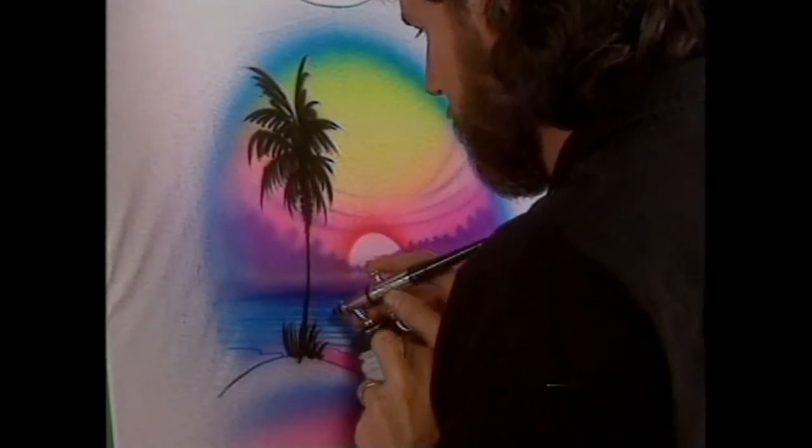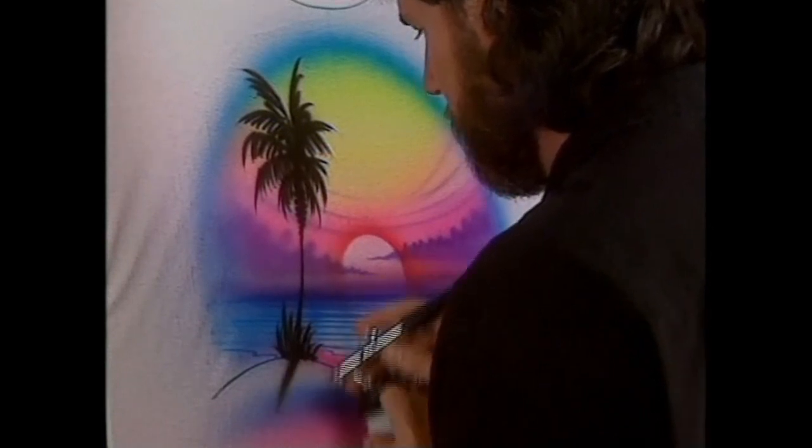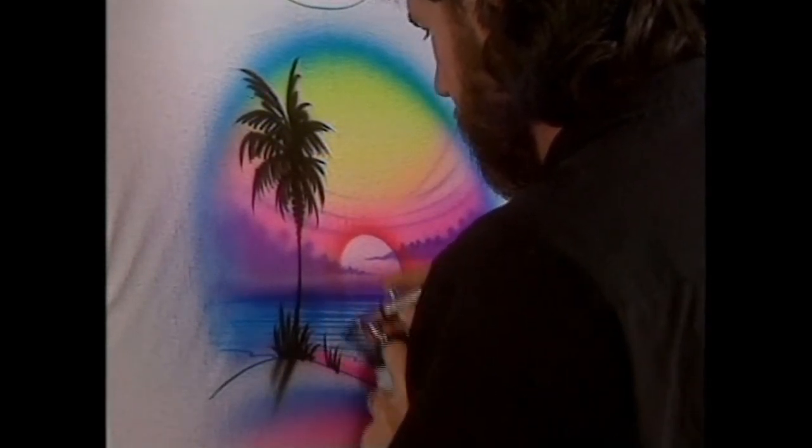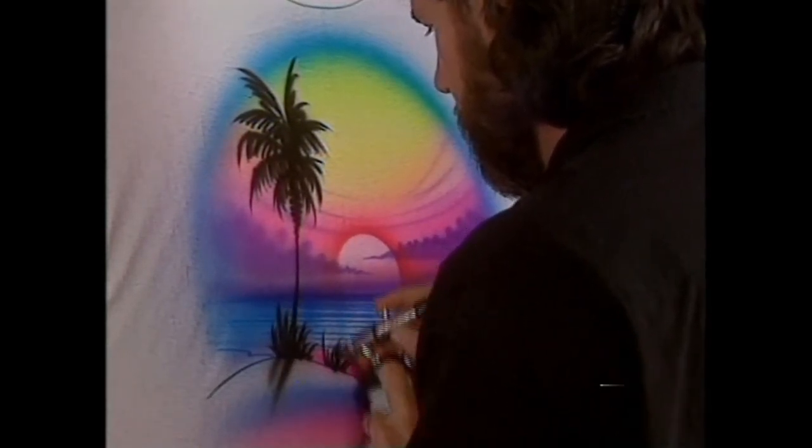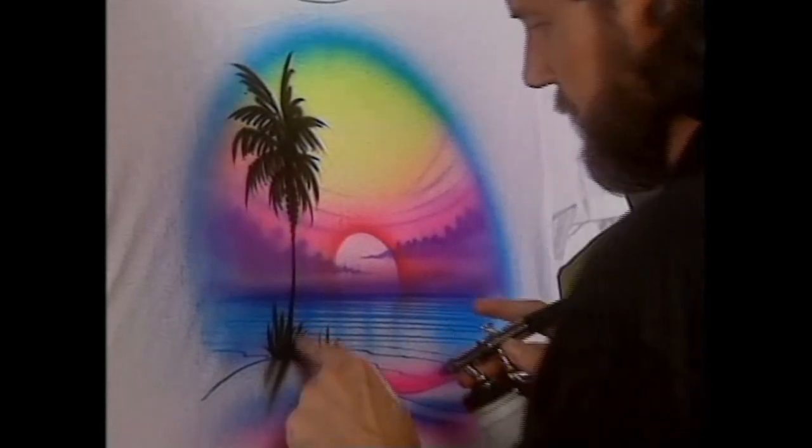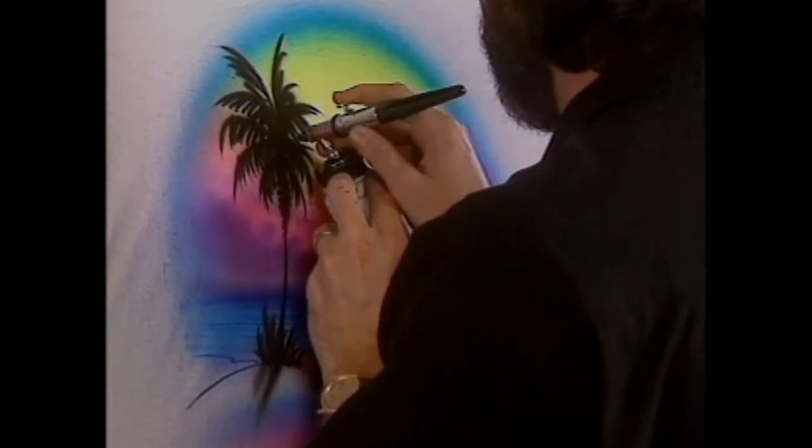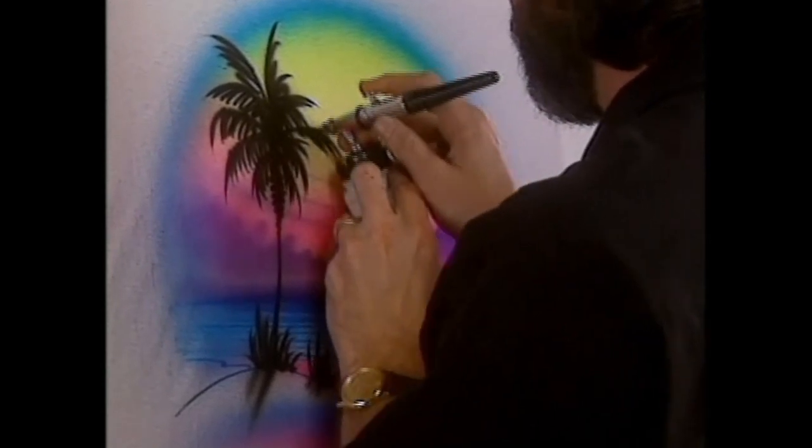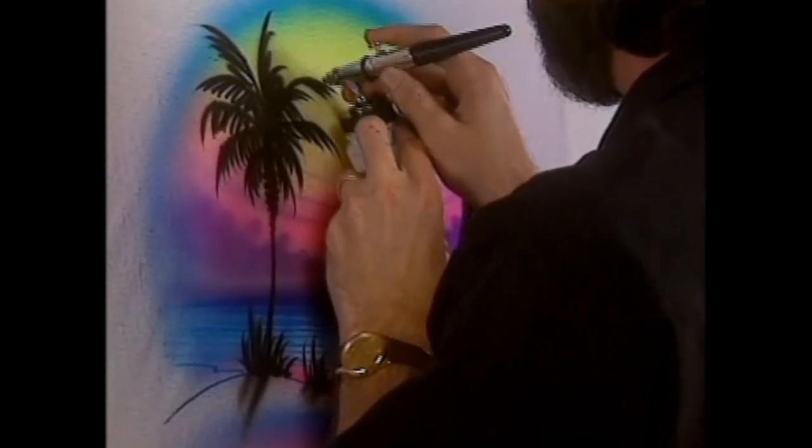All it is is a medium line all the way down to a point. A little bit of grass. Take a little bit of shadow and pull off the sand and it looks like you've got a little bit of shadow there and a little depth.